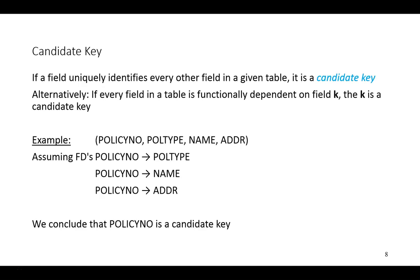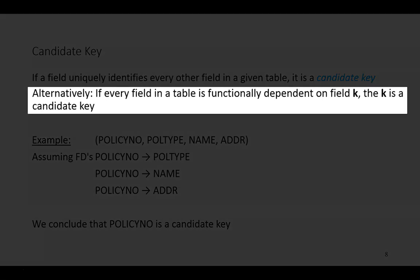If all of this sounds very familiar, it comes back to the idea of candidate keys, something we have discussed in the notion of database design. So if a field uniquely identifies every other field in a given table, it is a candidate key. Using what we've just talked about in terms of functional dependence, we could say that if every field in a table is functionally dependent on some field K, then K is a candidate key.